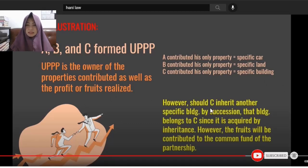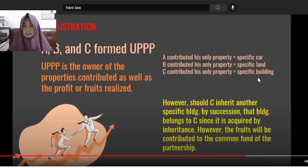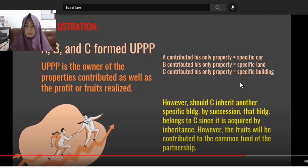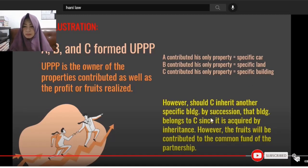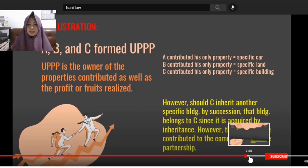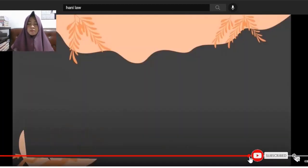But if C later inherits another building by succession, that building is not included as a UPPP property. However, the rent that C derives from that inherited building goes to the UPPP, because they are a Universal Partnership of Present Property.